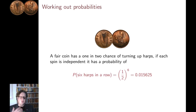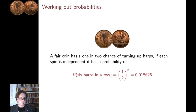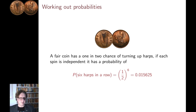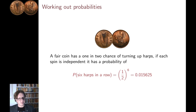At its most familiar, we work out probabilities. Say you have a coin and it's a fair coin, so each side is equally likely to turn up. Then the chance of flipping it and getting a harp is 1 in 2. What's the chance of getting six harps in a row? Well, if we assume that each of the spins is independent, it will be a half by a half by a half, six times, and that's a probability of 0.01565. So that's an example of working out probabilities.